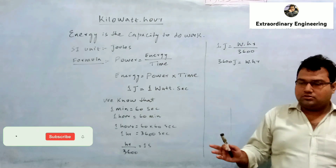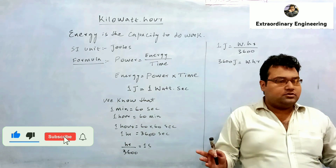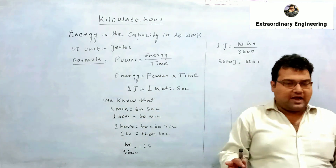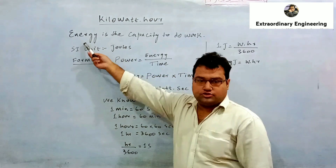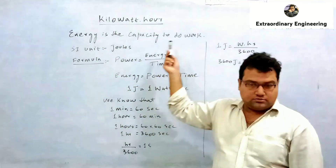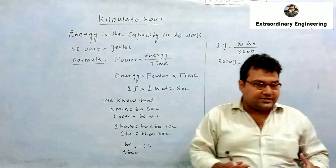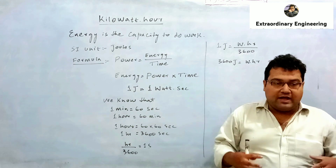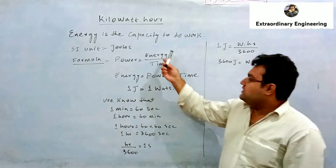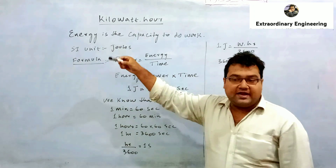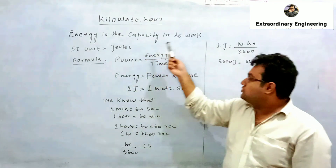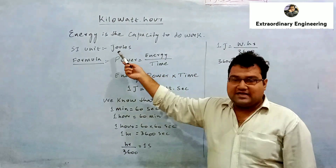Today I will teach you how we can derive the unit of energy, which is kilowatt-hour. First of all, I will write down the definition of energy. Energy is the capacity to do work. If you have the capacity, ability, or strength to perform any task, it means you have energy to perform that work.